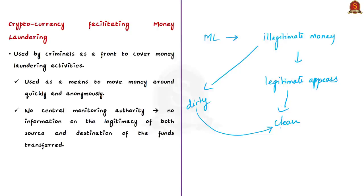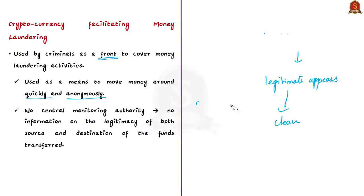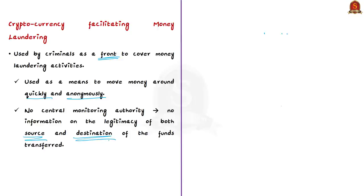Money can be laundered by many methods and passes through many stages. In the current digital and technologically advanced world, criminals use cryptocurrency as a front to cover money laundering activities — using it as a means to move money around quickly and anonymously. Bitcoin technology does not have any central monitoring authority, and the same applies to cryptocurrencies. Thus, there is no information on the legitimacy of the source or destination of the funds transferred, which helps criminals run money laundering activities undetected.